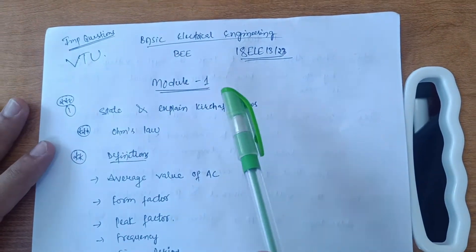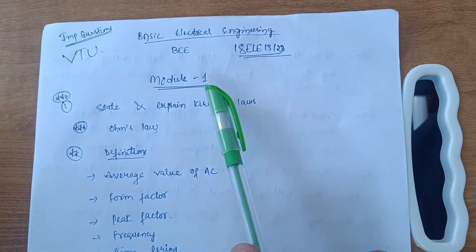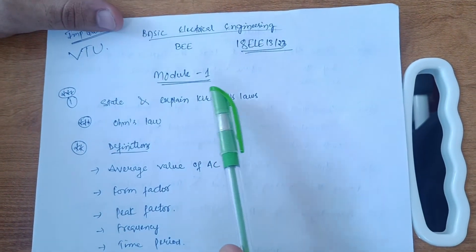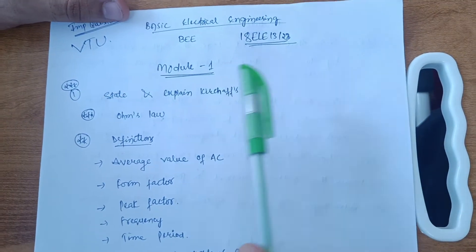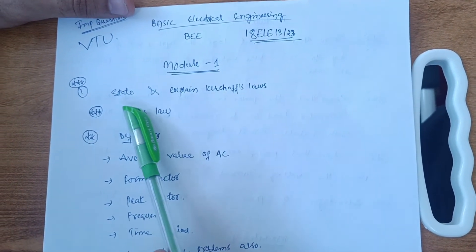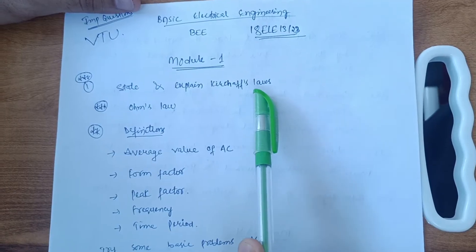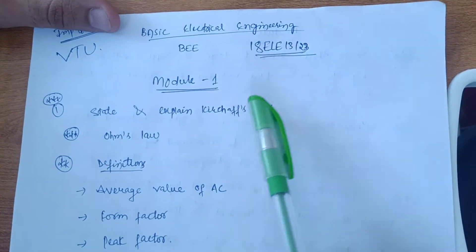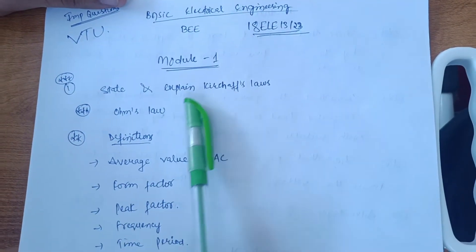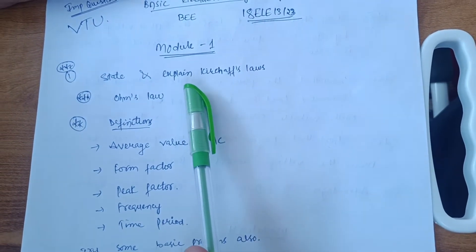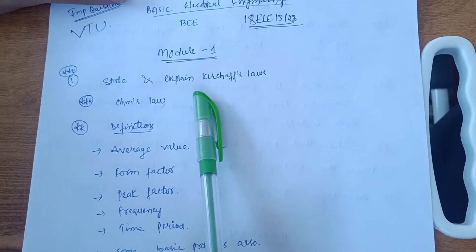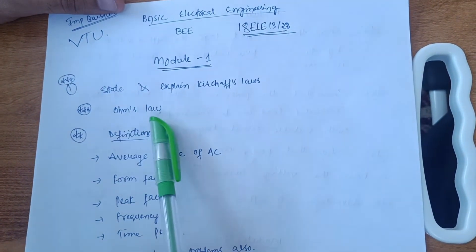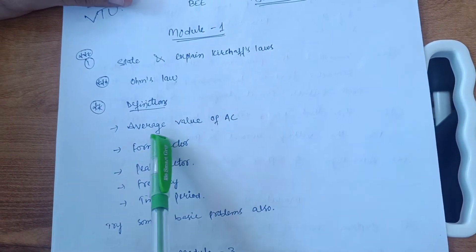Only one day is left — the examination is probably on the 16th for this subject. In Module 1, go for Kirchhoff's law: state and explain Kirchhoff's laws. There are two: the current law and the voltage law. The next important one is Ohm's law. These two laws are the most important from Module 1, so go through Kirchhoff's law and Ohm's law.